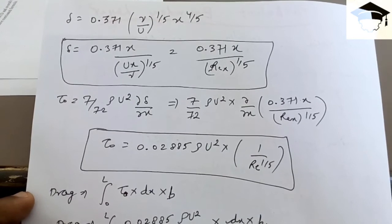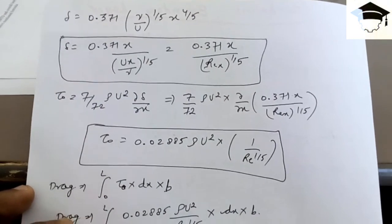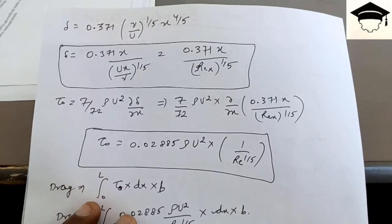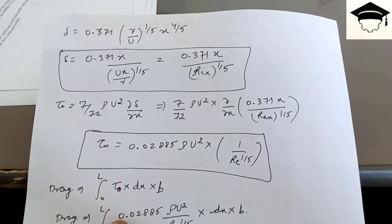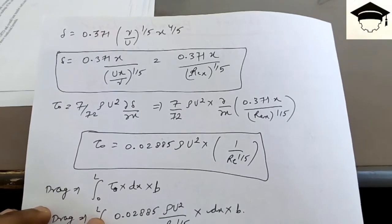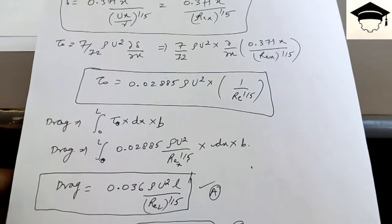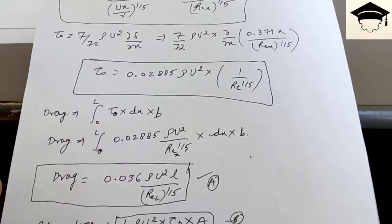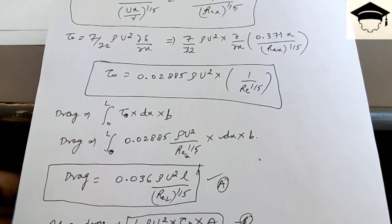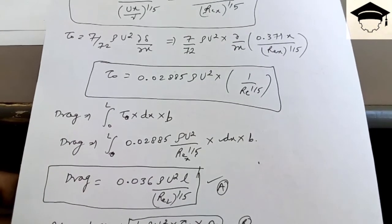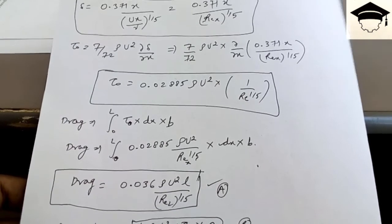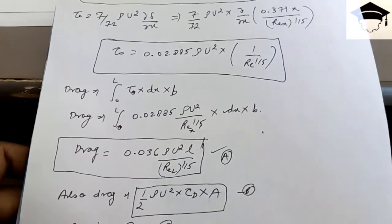The drag force is given by the integration of shear stress over the area on which it acts: F_D = ∫₀ᴸ τ₀ × dx × b. Substituting τ₀ = 0.02885 ρU² / Re^(1/5) and assuming width b = 1, the drag force comes out to be F_D = 0.036 ρU²L / Re^(1/5).